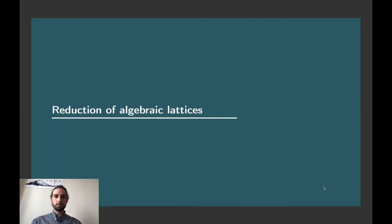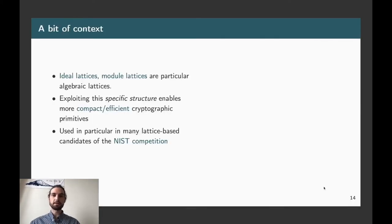So, using this definition, now we can wonder what is the possible reduction of such objects. And to give a bit of context before explaining how we do that, just recall that the so-called ideal lattices and so-called module lattices are just particular forms of algebraic lattices. This algebraic lattice concept is encompassing anything which is appearing in the field of lattice-based cryptography. In particular, exploiting the specific algebraic structure of such lattices enables to design more compact and more efficient cryptographic primitives. In particular, it's no surprise then that many lattice-based candidates of the NIST competition are relying on either ideal lattices or module lattices. So being able to have a reduction procedure for this very particular kind of lattices is of the utmost interest for the security evaluation of post-quantum candidates.